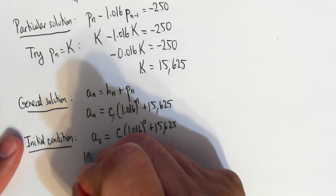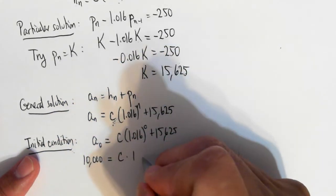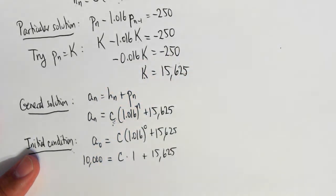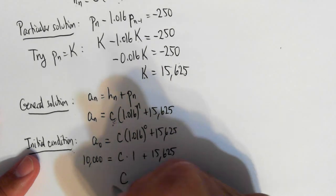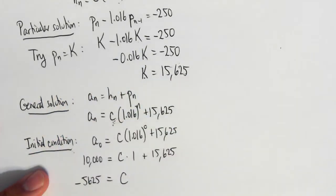So 10,000 equals c times 1 plus 15,625. And so solving for c, we find that c is equal to negative 5,625.